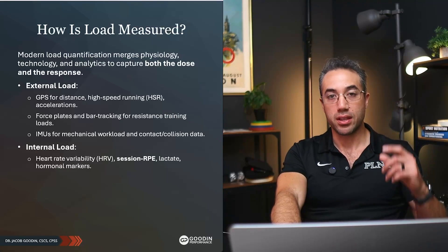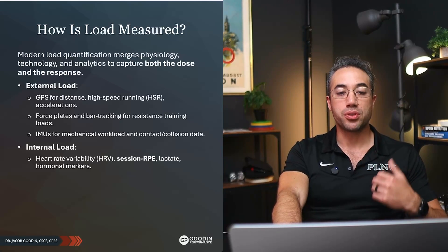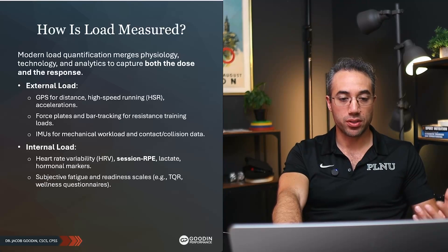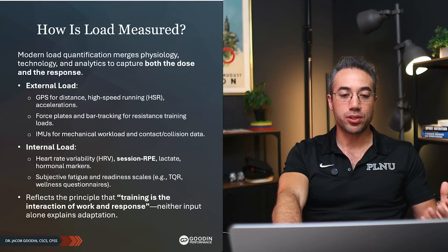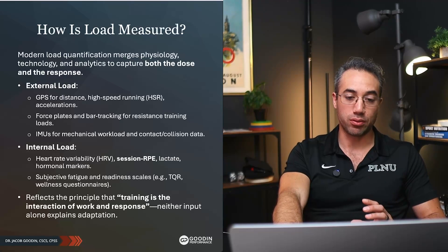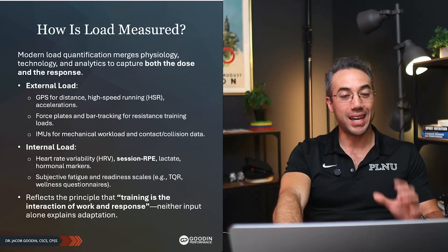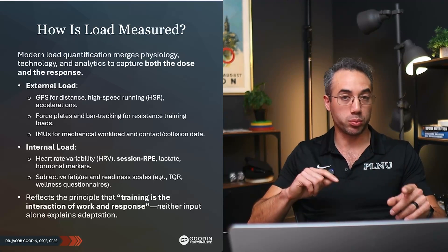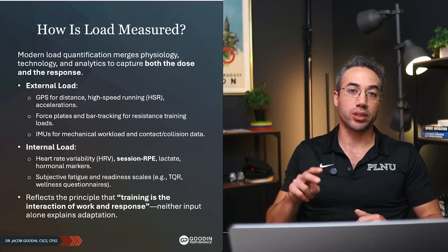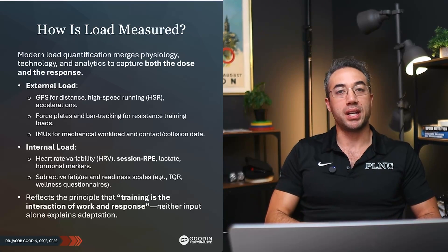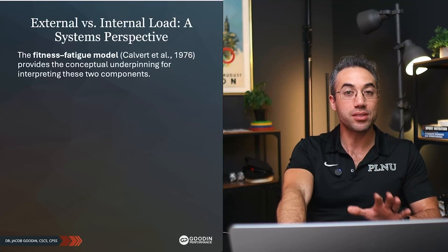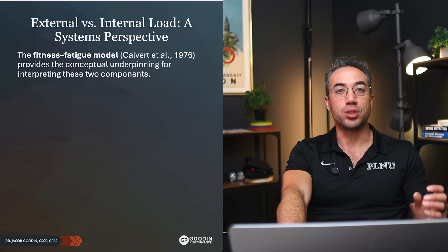For internal load — the perceptual and physiological side — we use heart rate variability, session RPE, heart rate, lactate, hormonal markers, and subjective fatigue and readiness scales. Training is the interaction of work and response; neither input alone explains adaptation. We need both external and internal load. That way we can triangulate multiple variables: player load, high-speed running, heart rate, session RPE, accelerations per minute, total distance — whatever within your framework gives you the most actionable data.